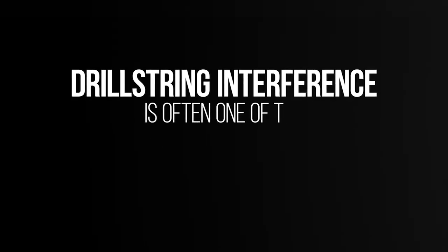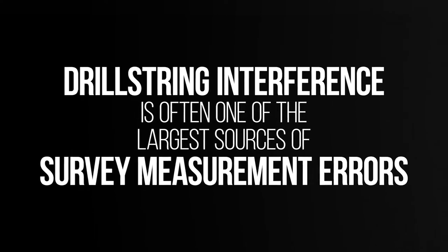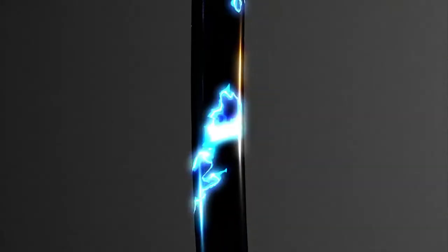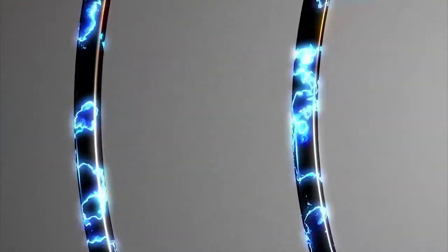Drill string interference is often one of the largest sources of survey measurement errors. To understand what drill string interference is, first we have to have a basic understanding of magnetic fields, specifically the Earth's magnetic field, and also the magnetic field of the drill string itself.